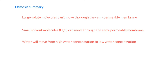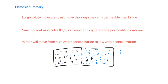So in summary for osmosis: the large solute molecules can't move through the semipermeable membrane — they'd love to diffuse, but they can't. It's only those small molecules like water that can move through the membrane. And water will move from high water concentration to low water concentration. It's a bit odd to think about water itself having a concentration, but there you go.